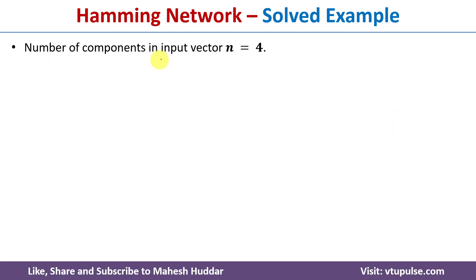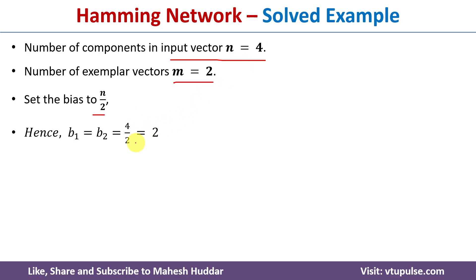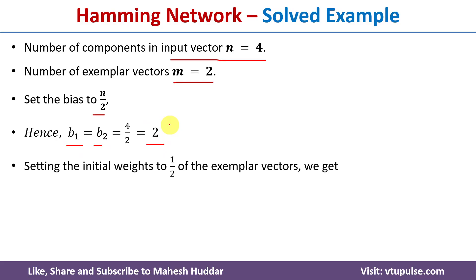The number of components in the input vector is 4, so n = 4. The number of exemplar vectors is 2, so m = 2. The bias is always n/2, that is the number of components in the input vector divided by 2. Since n = 4, the bias is 4/2 = 2. So B1 = B2 = 2.